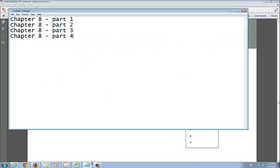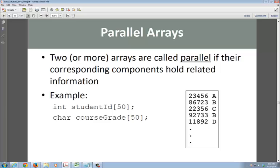This is Chapter 8, Part 5. I get into what's called parallel arrays. Parallel arrays run side-by-side. Two or more arrays are called parallel arrays if their corresponding components hold related information.